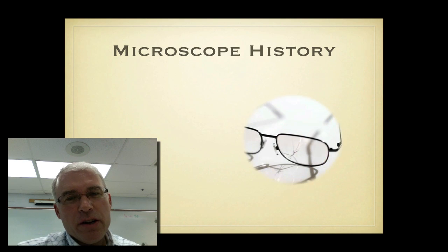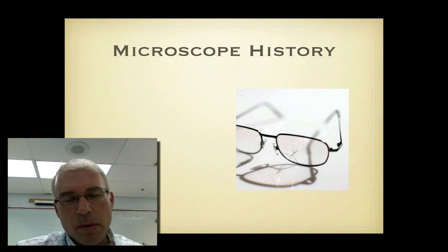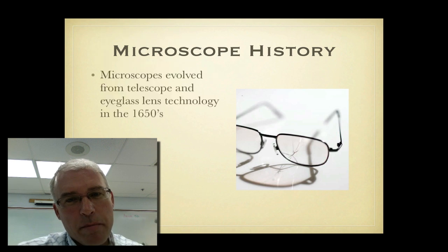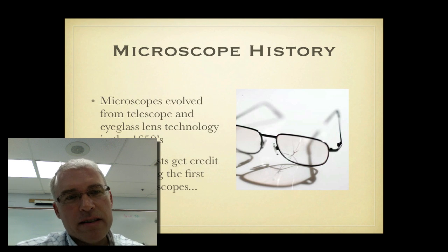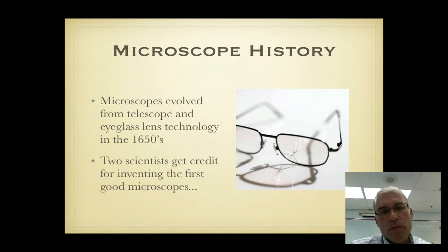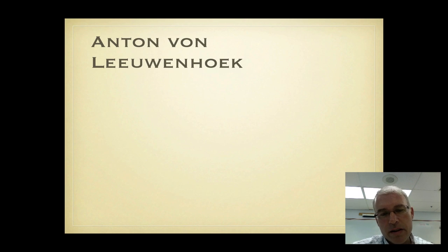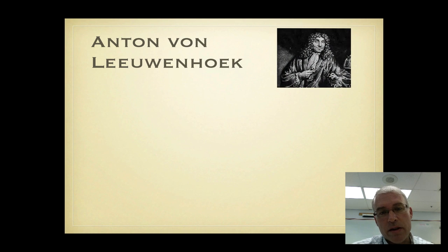A little bit first about the history of microscopes. Microscopes started out as telescopes and the people that built the first microscopes knew how to make and manufacture lenses like lenses you'd find in eyeglasses today. The first microscopes were put together starting in about the middle of the 1600s, about 1650, and two scientists get credit for inventing the first good microscopes that could be used for biology.